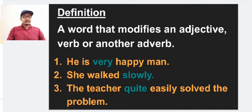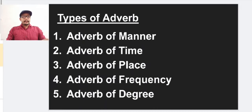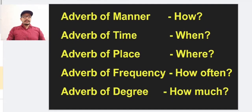Let us study the types of adverb. There are five types of adverbs: adverb of manner, adverb of time, adverb of place, adverb of frequency, and adverb of degree. Before we discuss each, let us see some tips.